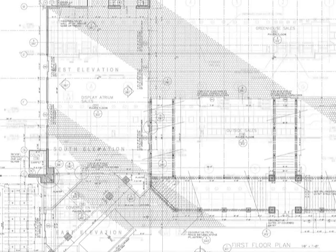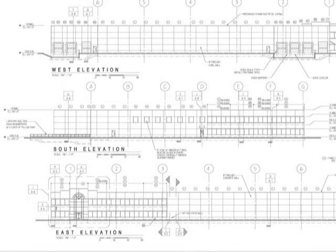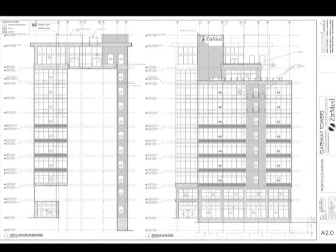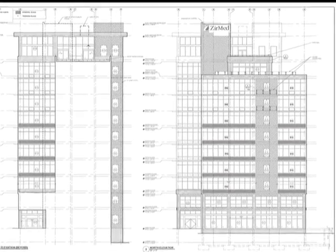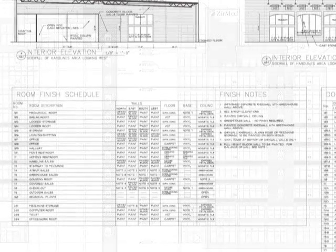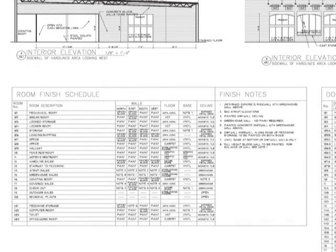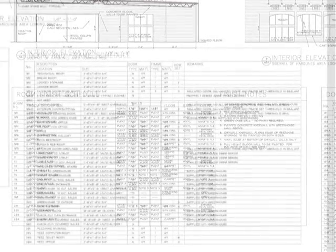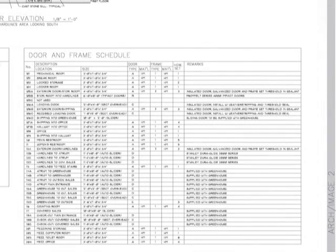The floor plans are a reference point for all the other information, such as sections and details. Elevations are also a key element of the architecture — these drawings show the key finishes and view of the exterior. Like the floor plans, they are the reference drawings for the exterior. You will also find schedules that define all the room finishes, doors, and wall types.